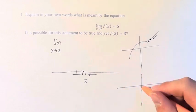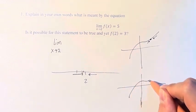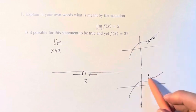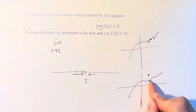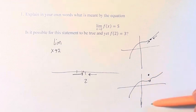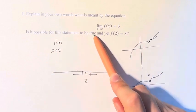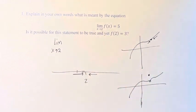As opposed to a function like this, the value of the function is way up here, but we're approaching this value down here. This is still a function, it might not look like many functions that you're used to, but just because the function is approaching a certain value at a point doesn't mean when you actually get to that point, it's going to be at the same value. So yes, it is possible for this statement to be true and yet f(2) equals 3.